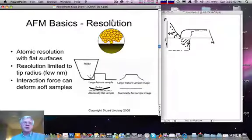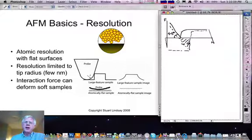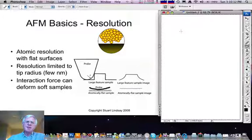Finally, we turn to the question of resolution in an AFM. AFMs can get atomic resolution, but only on very flat surfaces, as illustrated in this figure right here. As soon as the surface ceases to be flat, atoms on the end of the probe can no longer dominate the imaging, and then what one samples is the long range geometry of the probe.